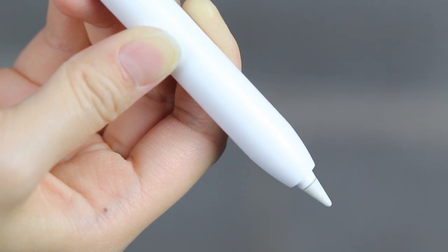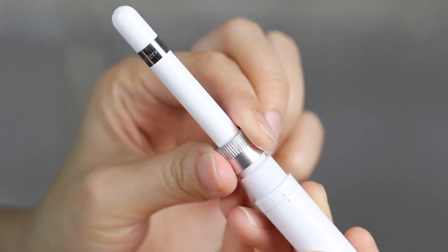Insert your Apple Pencil into the bottom half of the case and twist the metal screw to lock the pencil in place.